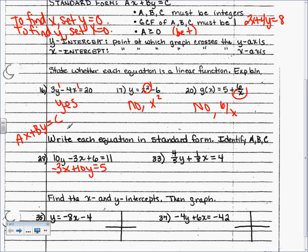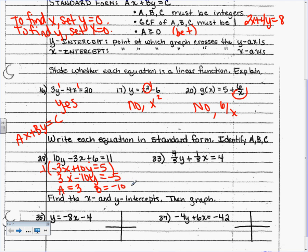Now check the rules. A, B, and C must be integers — no fractions or decimals, so we're good. The GCF of 3, 10, and 5 is 1, so that's good. But A must be positive — negative 3 is not positive. Multiply the entire equation by negative 1 to change all the signs. This gives us 3x − 10y = −5. Now it follows all the rules: A = 3, B = −10, C = −5.